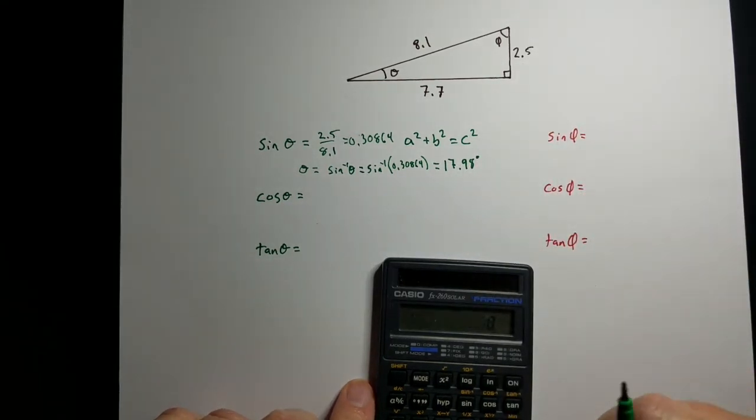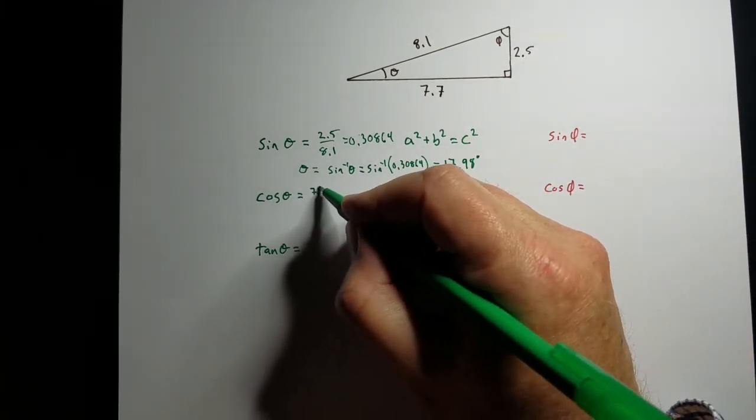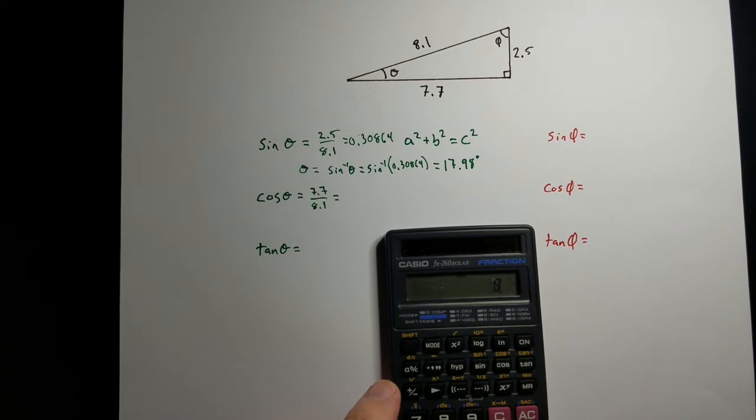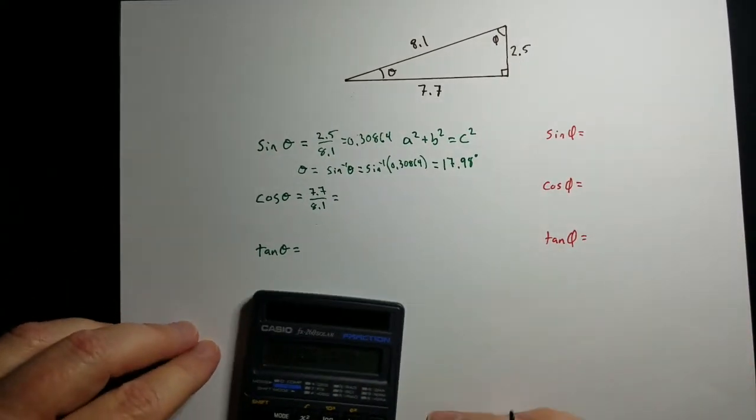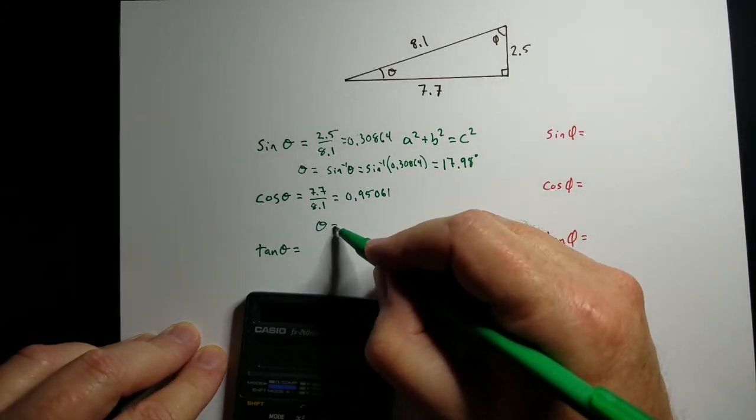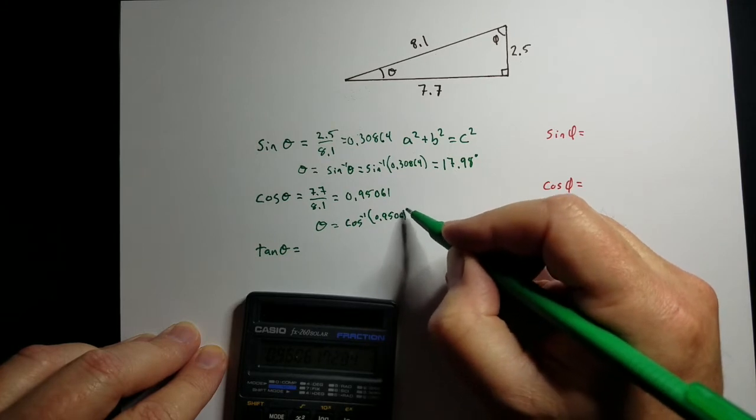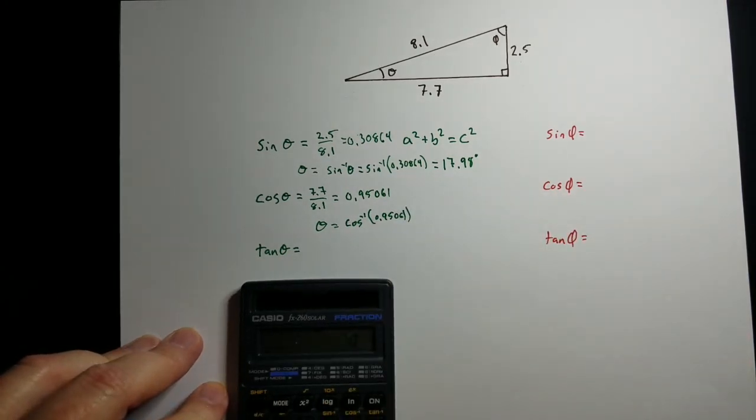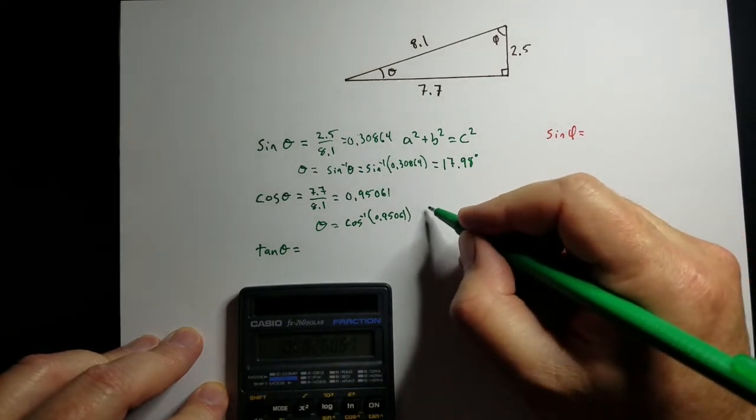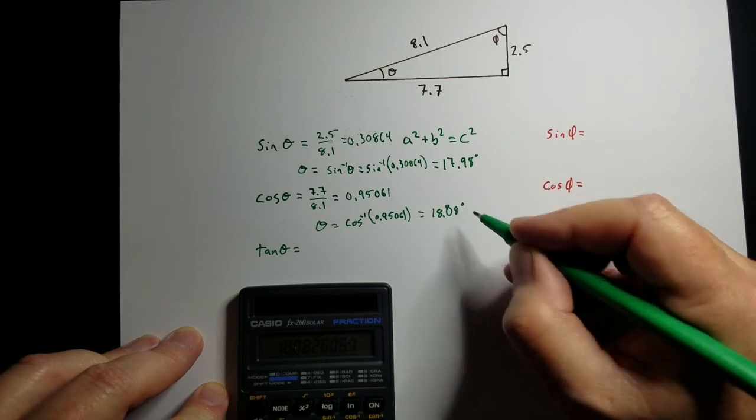On my old calculator, we type it in backwards. We get the number in first, 0.30864, and then you hit shift and then the function that you're using, so we're using sine. And that gives me that this angle theta is 17.98 degrees. For cosine, we've got adjacent over hypotenuse. So that would be 7.7 over 8.1. If we do that, 7.7 divided by 8.1, we get 0.95061. If I want the angle, we want the arc cosine of that number, 0.95061. Type that in, shift cosine, we get around 18.08 degrees.